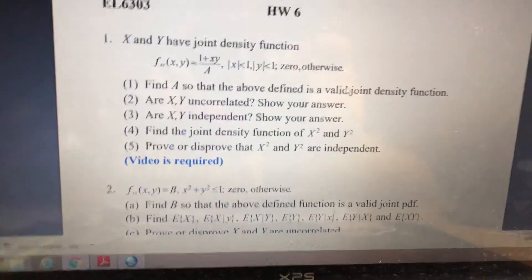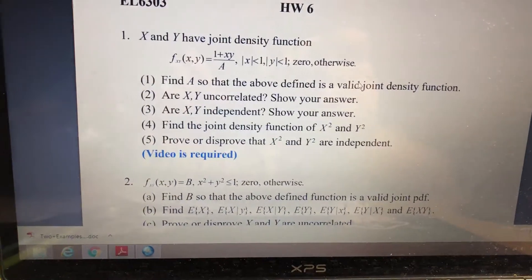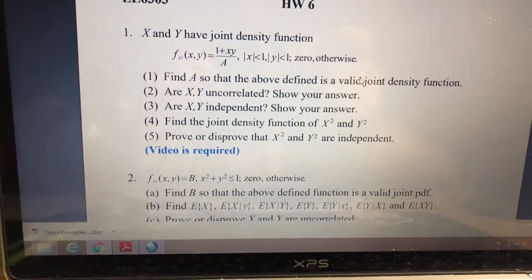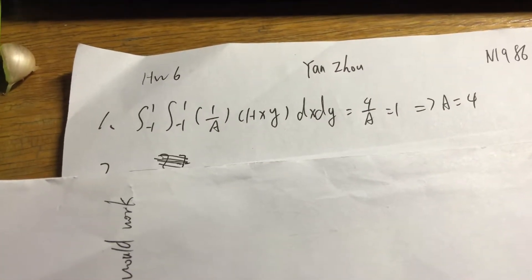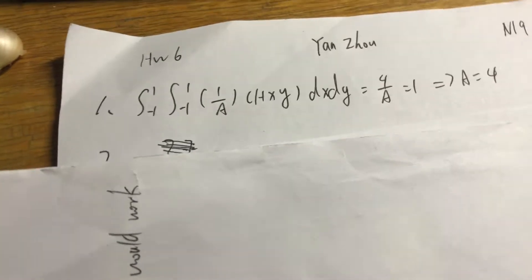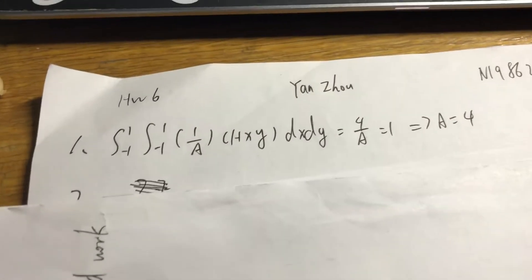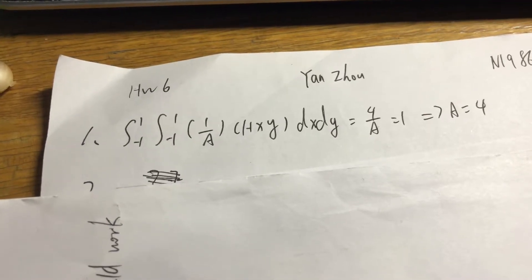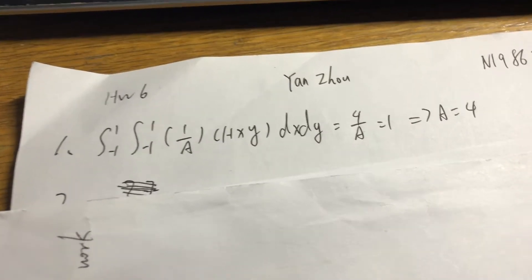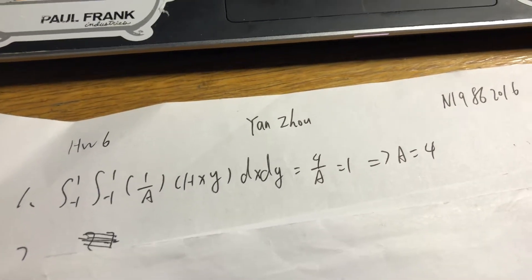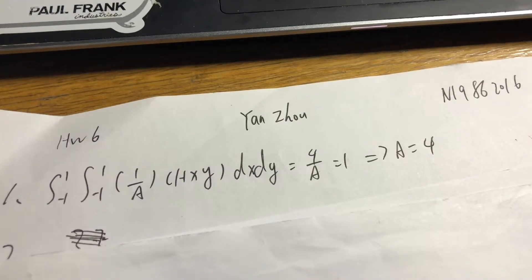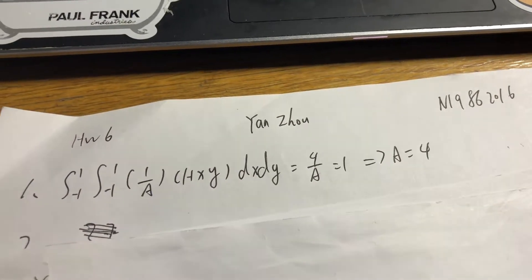So the first question is: find a so that the above defines a valid joint density function. We need to find a first. We integrate (1 over a) times (1 plus xy) dx dy, with x and y both ranging from -1 to 1. That equals 4 over a, set equal to 1. So we get a equals 4.